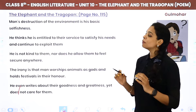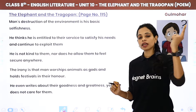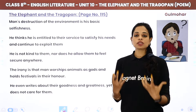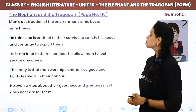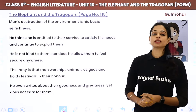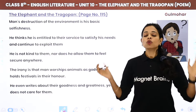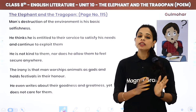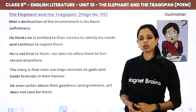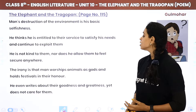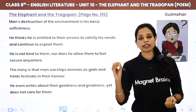Man's destruction of the environment is his basic selfishness. He thinks he is entitled to their service — to satisfy his needs and continue to exploit them. He feels all animals, all plants, all of nature exists to serve him, and it is his basic right to exploit them all. He is not kind to them, nor does he allow them to feel secure anywhere.